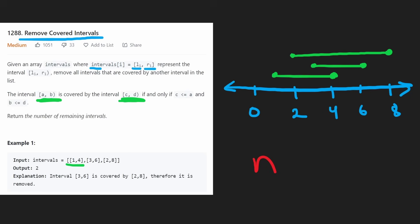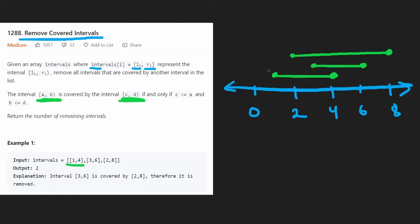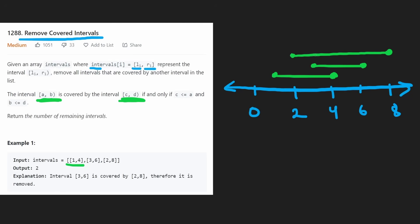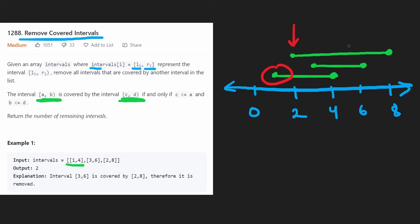But is there a better way? Could we possibly iterate through the intervals in some order where we wouldn't have to do an n² thing and could just iterate through the entire list once? My first idea is to sort them based on the left point, where ones with a smaller left point go first and ones with a larger left point go after.